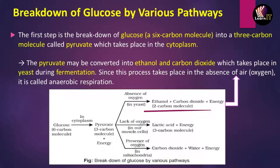The first pathway: pyruvate, converted in the cytoplasm from glucose, is further converted into ethanol and carbon dioxide. This process takes place in yeast during fermentation. This step occurs in the absence of oxygen, which is why it is known as anaerobic respiration — meaning no requirement of oxygen.